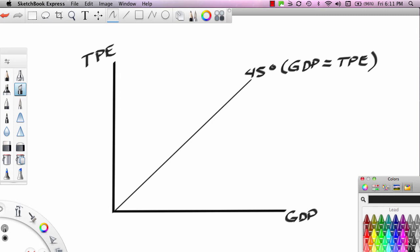Now, what we want to do is we want to impose over the 45-degree line an expenditure line. So I'll go to a color green here. And we know that the expenditure line has a positive y-intercept. We also know that its slope is less than 1. So we'll put that in. And this is C plus I planned, plus G, plus X, minus M. Now, a couple reminders. The expenditure line has a positive y-intercept. The slope of the expenditure line is less than 1. It has to be.